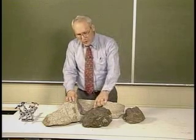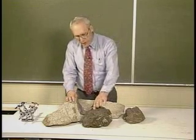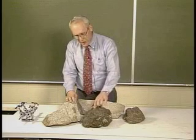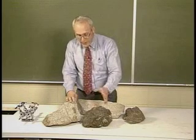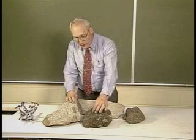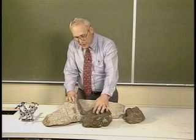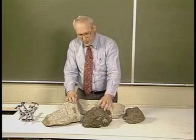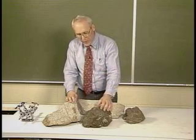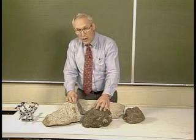When you look at the basalt, characteristic of the oceanic crust, and ignoring the little holes that come about because of gas bubbles that boil out of the rock when it hardens, you'll see that the rock itself is smooth and doesn't have the grains that the granite has.